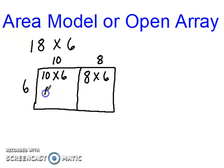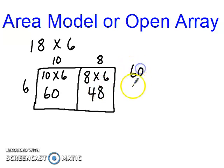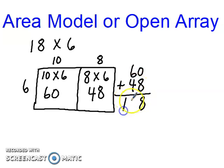In the first box I have 10 times 6, and in the second box 8 times 6. Multiplying: 10 times 6 is 60. For 8 times 6 — if you don't know your 8s or 6s well, you can use the fact that 3 is half of 6: if 3 times 8 is 24, double it to get 48. So 8 times 6 equals 48. Then I add the two partial products: 60 plus 48. 8 plus 0 is 8, and 6 plus 4 is 10, giving an answer of 108. These are examples of an area model, or open array — you'll hear them called both ways.